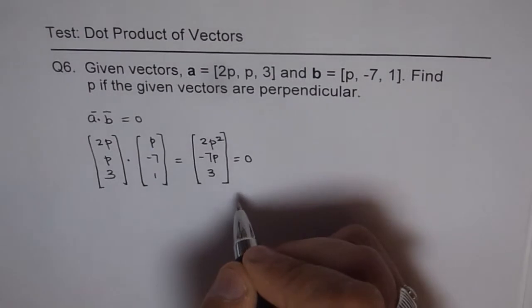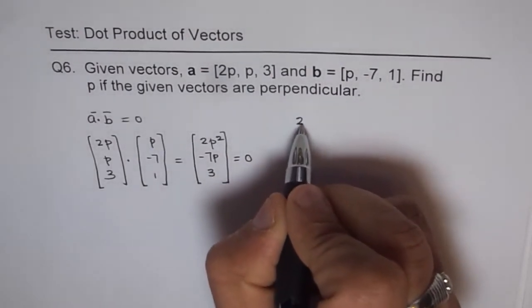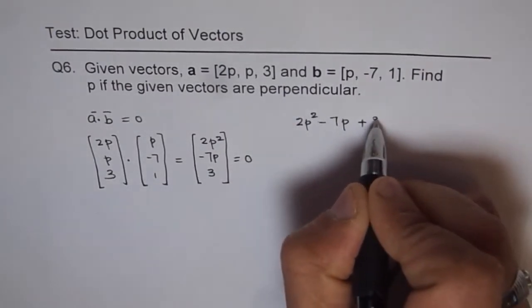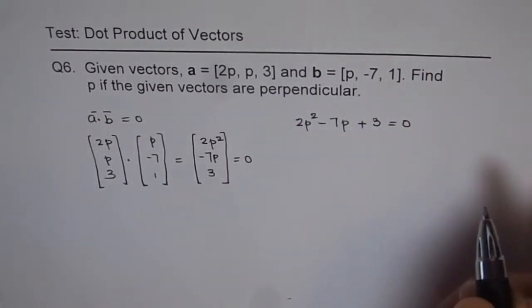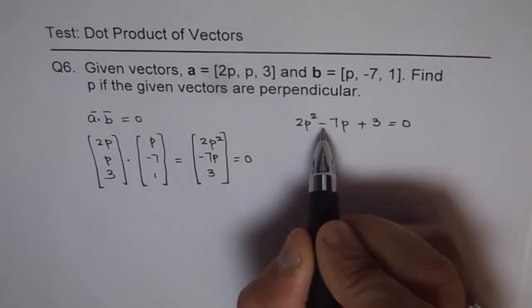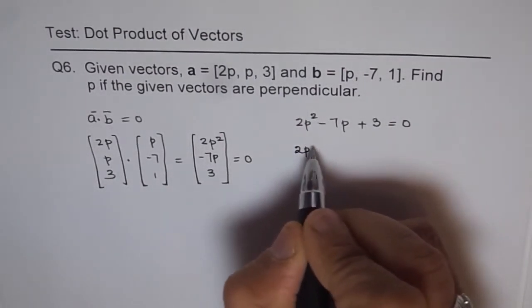So that gives us a quadratic equation. The quadratic equation before us is 2P square minus 7P plus 3 equals to 0. Now let's factor it. So we need product of 6 and sum of minus 7. So the two numbers will be minus 6 and minus 1.